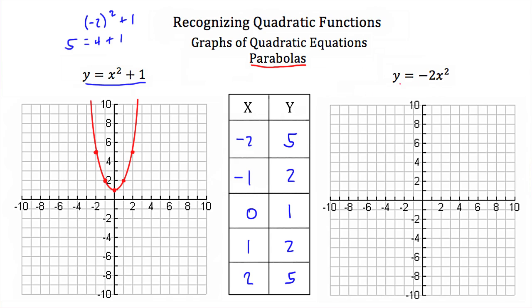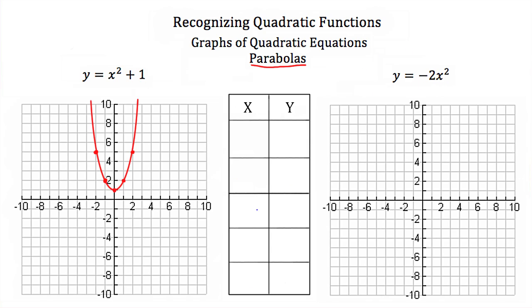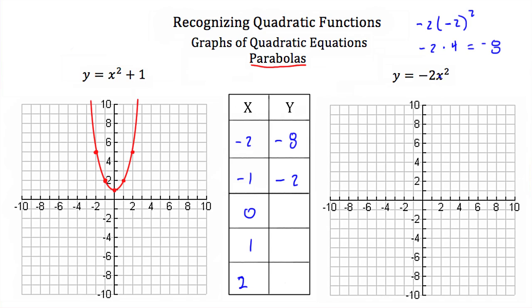Let's try graphing this next equation, y is equal to negative 2x squared. We're going to need some x values — again, I'm going to pick negative 2, negative 1, 0, 1, and 2. If I plug in negative 2 for x, I'll have negative 2 times negative 2 squared. Negative 2 squared is a positive 4, and if we multiply that by negative 2, that's negative 8. If I plug in negative 1 for x, negative 1 squared is a positive 1; multiply it by negative 2 and you'll get negative 2. If you plug in 0 for x, 0 squared is 0, multiply 0 times negative 2, you get 0. If you plug in 1 for x, 1 squared is 1 times negative 2, and that's negative 2. And if you plug in a positive 2 for x, 2 squared is 4 times negative 2, which is negative 8 again.